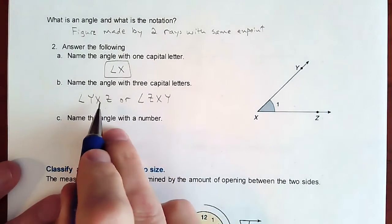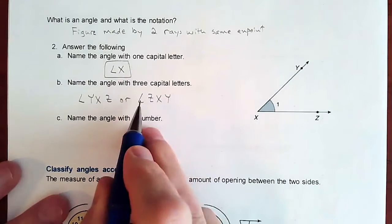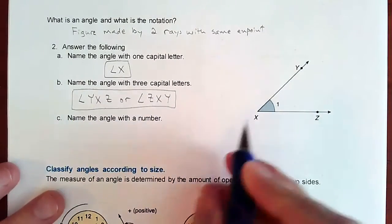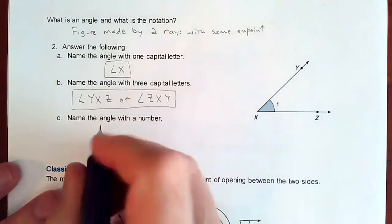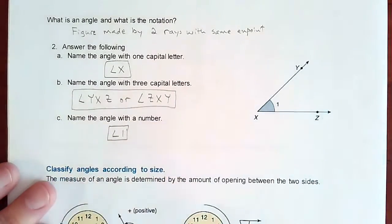But notice how x is in the middle, that's called the vertex. And those are kind of the beginning or end depends on the direction you go, but they do represent the exact same angle. And one other way is if you do have a number, you can just say it's angle one, and that's the only angle it can be.